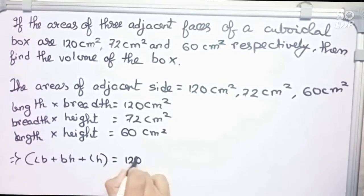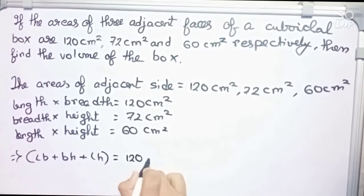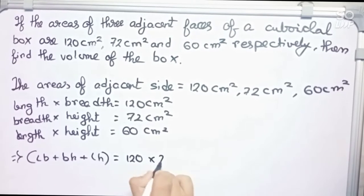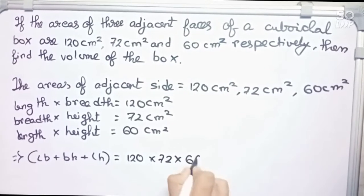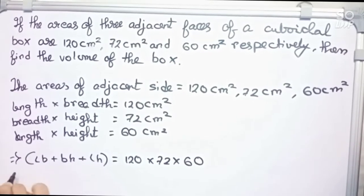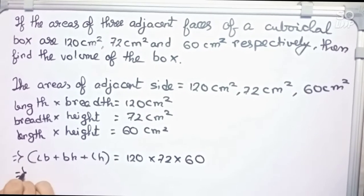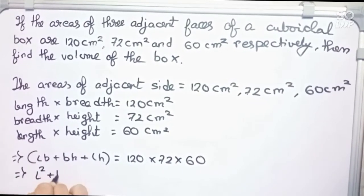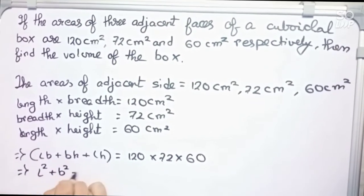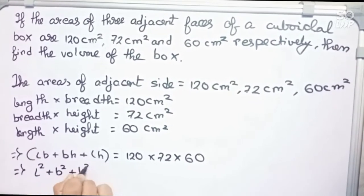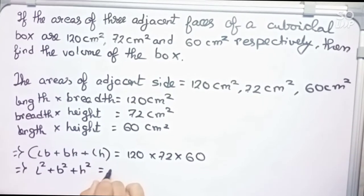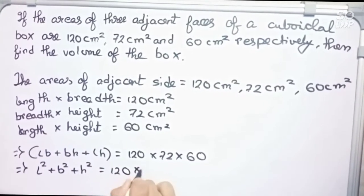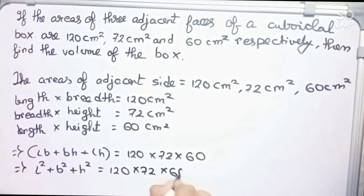So lb × bh × lh equals 120 into 72 into 60. This means l²b²h² equals 120 into 72 into 60, which gives us lbh — that is, the volume — equals the square root of 120 into 72 into 60.